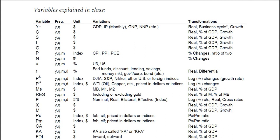I've got variable, my notation, frequency — yearly, quarterly, monthly, and you can even get daily or minute-by-minute. But I focus on macro, not financial. So GDP, for example, is yearly or quarterly. You can't get monthly GDP — it does not exist.